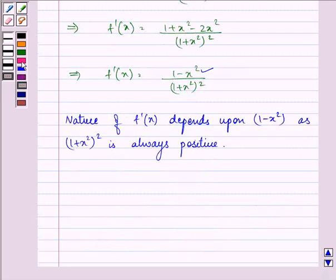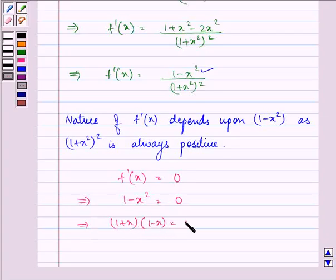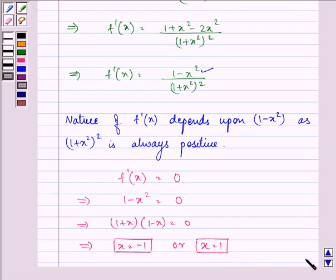Now, let us find out the value of x by putting f dash x equal to 0. This gives us 1 minus x square is equal to 0. So, 1 plus x into 1 minus x is equal to 0. That implies x is equal to minus 1 or x is equal to 1.